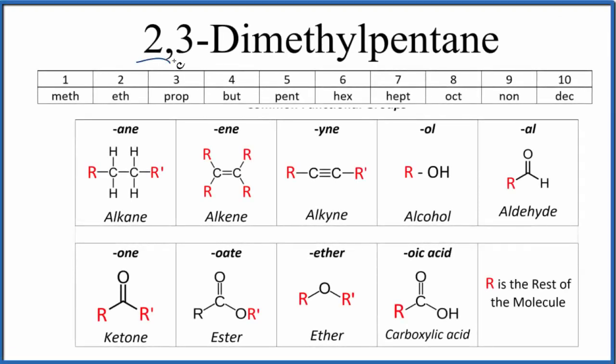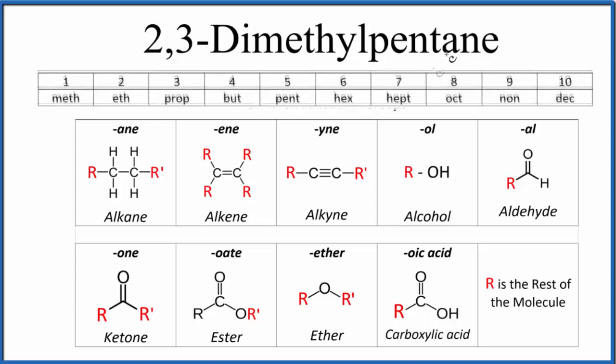Let's draw the structure for 2,3-dimethylpentane. The first thing we note is it ends in -ane, which means we have an alkane. An alkane is all carbons and hydrogens with single bonds.